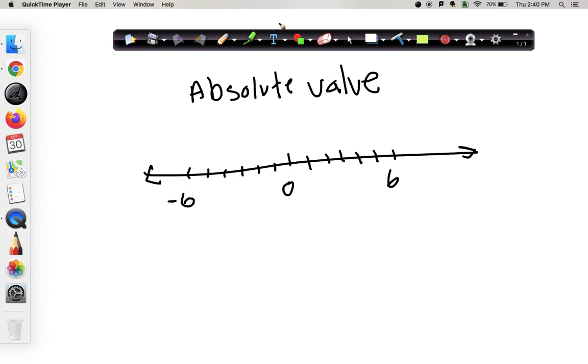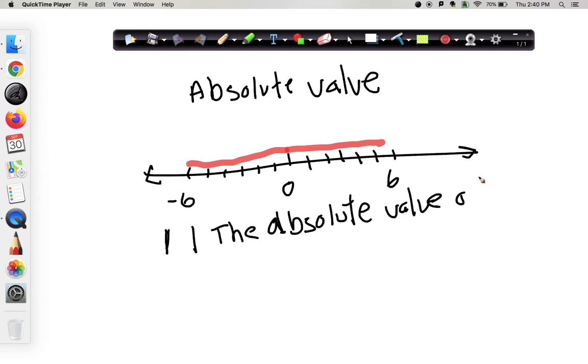Negative 6. This distance does not have a direction. So that's 6, and this is also 6. So the absolute value looks like this. We write these two lines. That means the absolute value. The absolute value of it is the distance from 0. And it's just positive from 0.